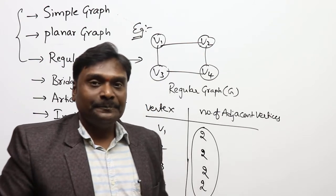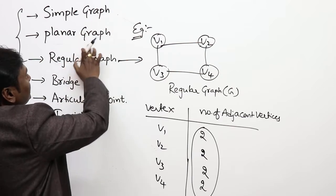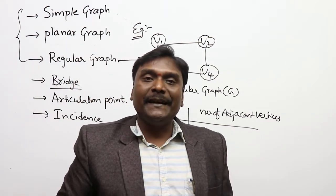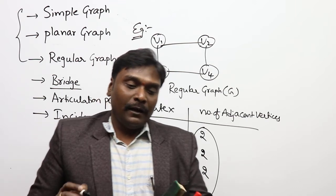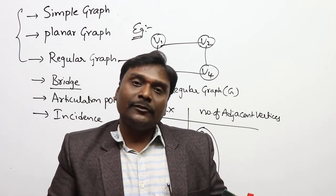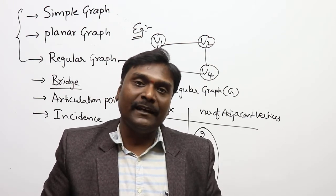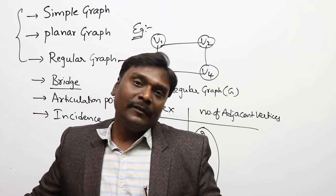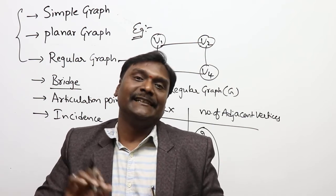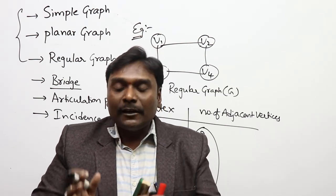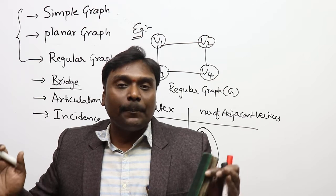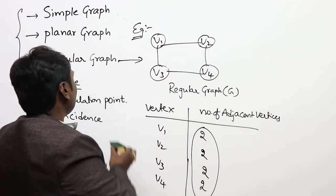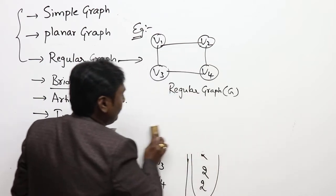So those are the definitions of simple graph, planar graph, and regular graph. The next terminology is bridge. A bridge connects two different parts of a graph through a particular edge. If you remove that edge, the graph becomes disconnected and two separate graphs are created — that edge is called a bridge.